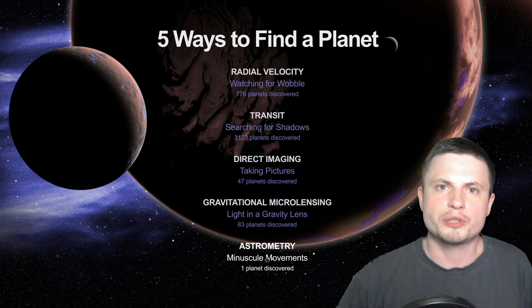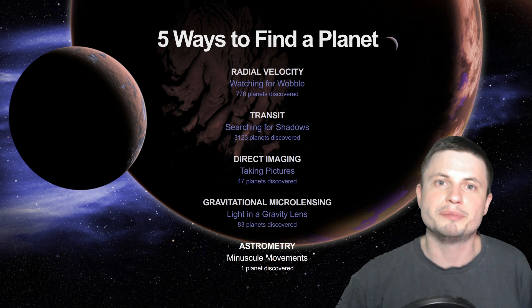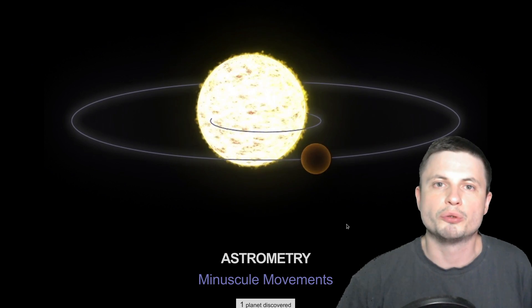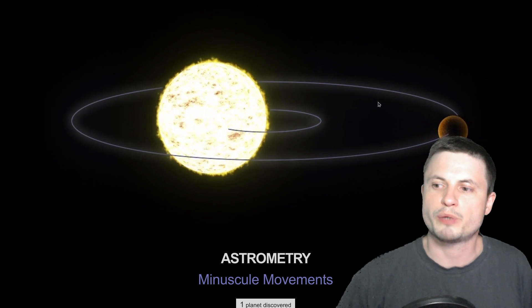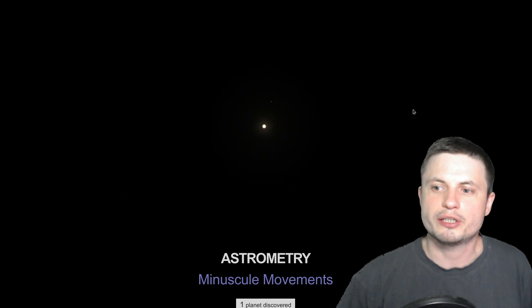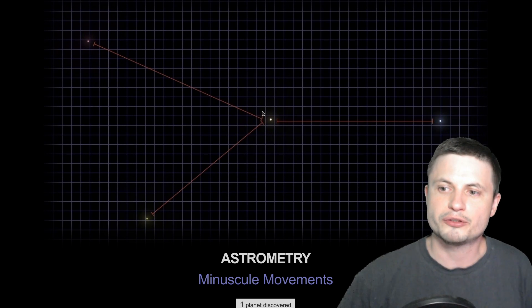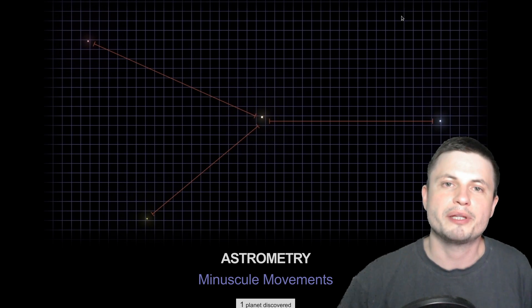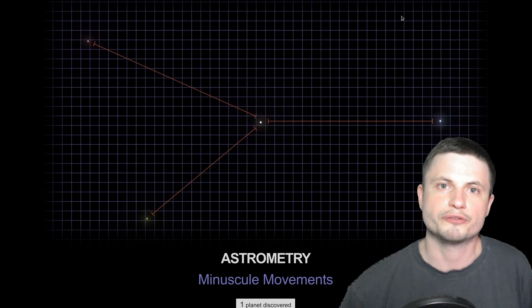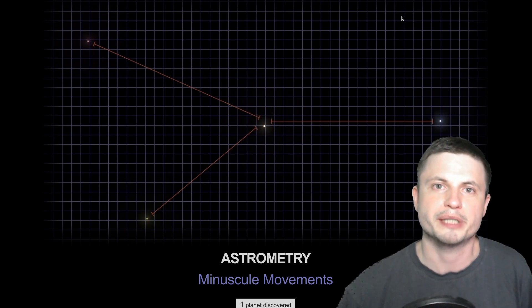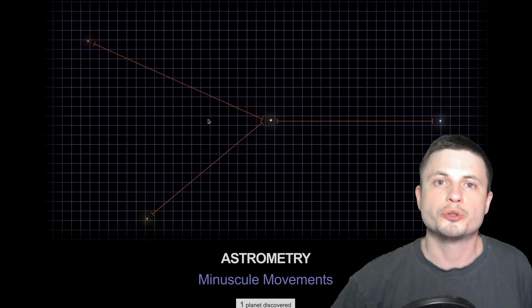And another interesting method that we often use but haven't really been that successful with is known as astrometry and this is when a planet pulls on the star but here we're looking at the star from basically the side view and we kind of get to see it move up and down left and right a little bit as if something was shifting it around. This is of course the shift caused by the planet. But unfortunately this method is really difficult to use so we haven't really discovered that many planets with it.